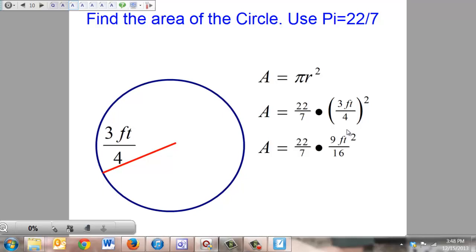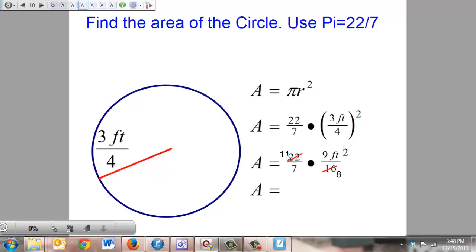Next, we're going to simplify before we multiply. The 22 and the 16 will simplify, becoming an 11 and an 8. I took 2 out of both of those, or divided both by 2, I should say.